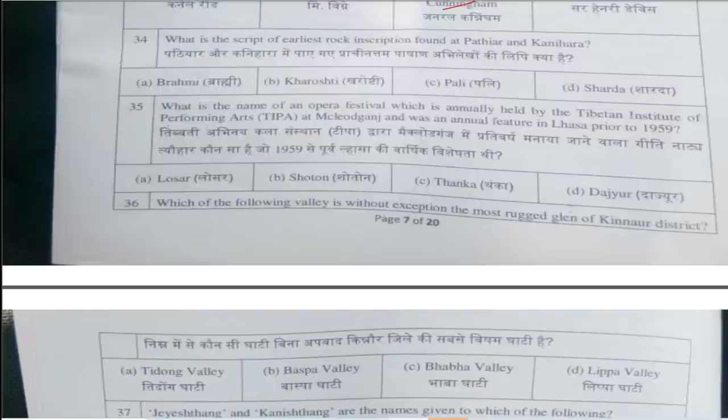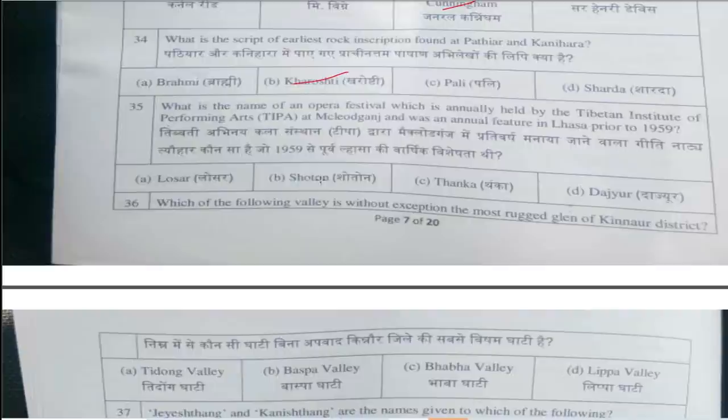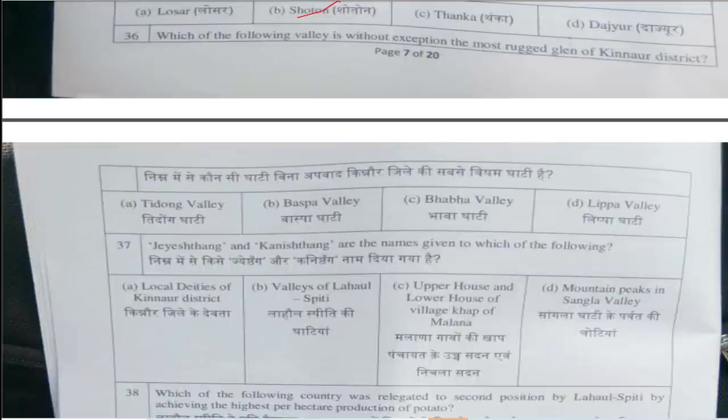Thirty-fourth question is: What is the script of the earliest rock inscription found at Patihar and Kanihara? The answer is option B, Kharoshti. Thirty-fifth question is: What is the name of an opera festival which is annually held by the Tibetan Institute of Performing Arts at McLoed Ganj and was an annual feature in Lhasa prior to 1959? The answer is option B, Shoton. Thirty-sixth question: Which valley is without exception the most rugged glen of the north district? Answer is option A, Hidong Valley.